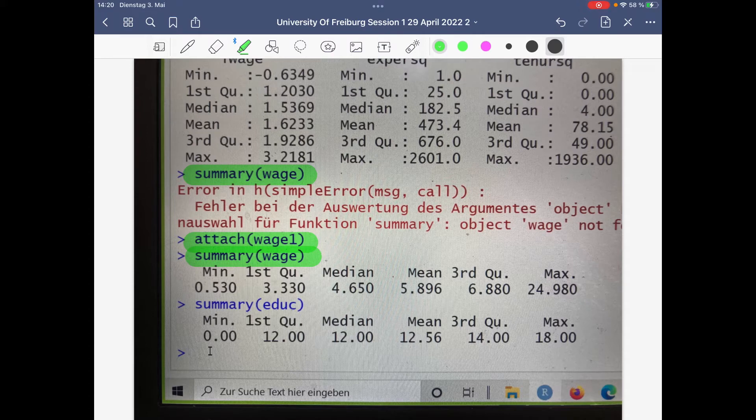Then you see minimum, max, first, third quarter, median, and mean. It's kind of summary statistics for wage, and you can do the same for education. I want to focus on wage and education in a typical Mincer sense to get some insights.